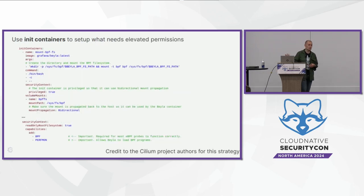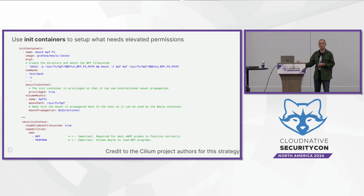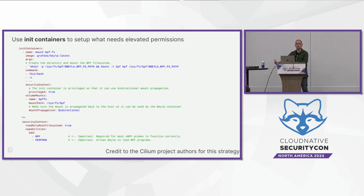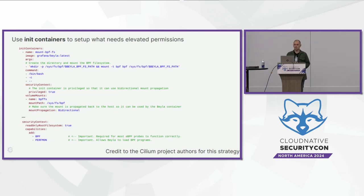Fortunately — credit to the Cilium project — the way to work around this is to create an init container with enough privileges to set up what's required for the main container. After this short-lived init container sets up the mounts and required permissions, the actual BPF program can run with much lower permissions — only what it needs. Your persistent final state in Kubernetes ends up far better than privileged: true.